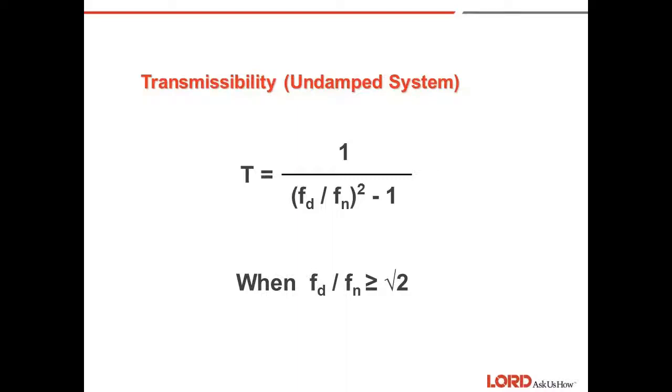Transmissibility, or T, is equal to 1 divided by the frequency ratio squared, which is Fd divided by Fn, and that quantity is minus 1. For an undamped spring when the forcing frequency ratio, Fd over Fn, is equal to or greater than the square root of 2, where Fd is the input or disturbing frequency and Fn is the natural frequency.